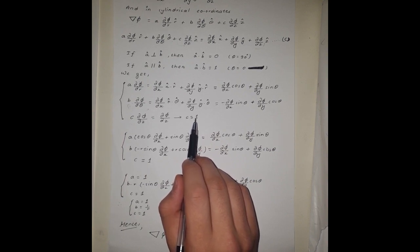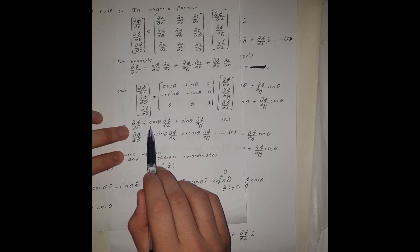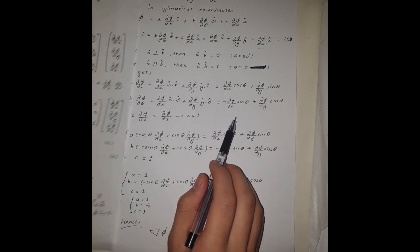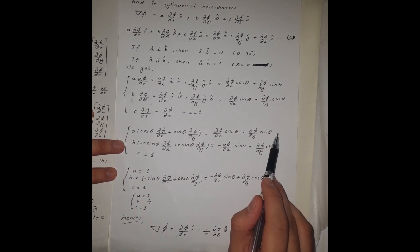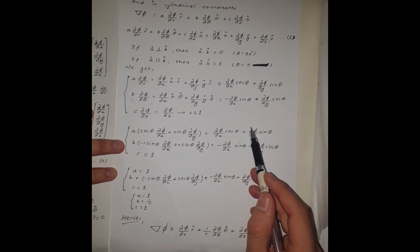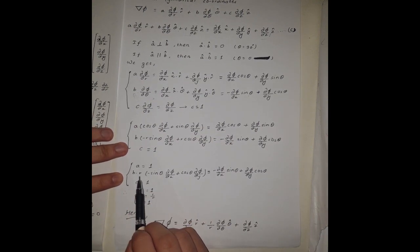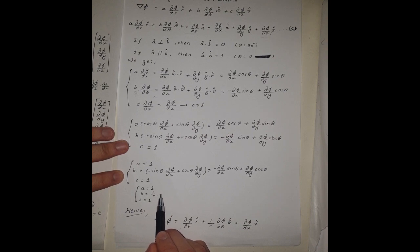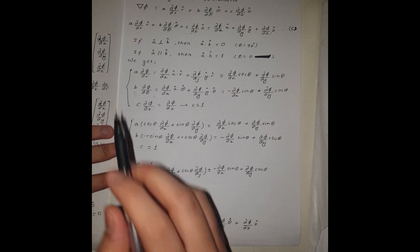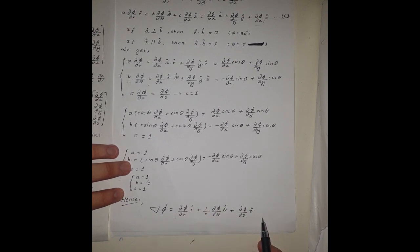Now the two equations derived earlier are useful. The partial derivative of phi with respect to r equals a known expression, and substituting this we can cancel terms to obtain a equals 1. Substituting the equation for the partial derivative of phi with respect to theta, taking r as a common factor and canceling terms, we obtain b equals 1/r. Substituting the values a equals 1, b equals 1/r, and c equals 1 back into the gradient expression gives the final required result for the gradient in cylindrical coordinates.